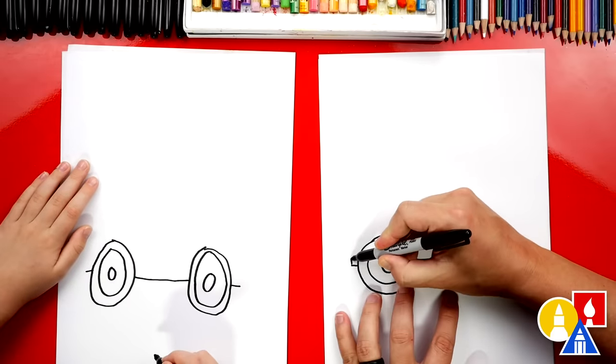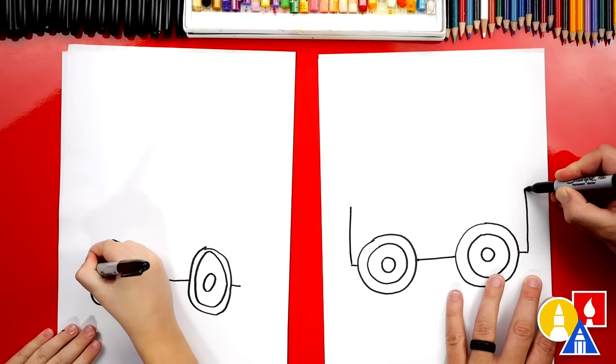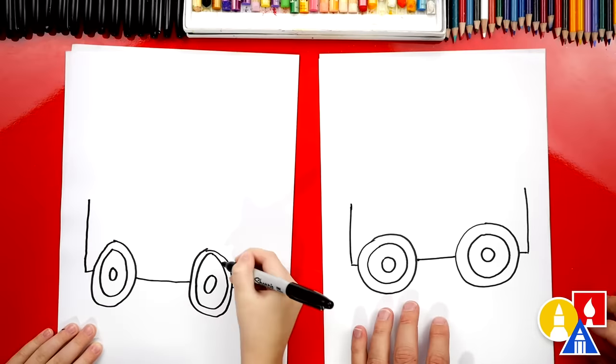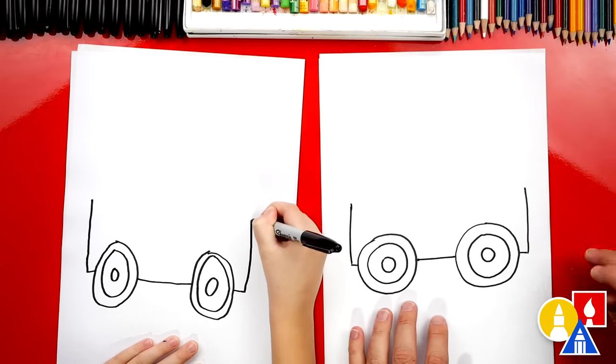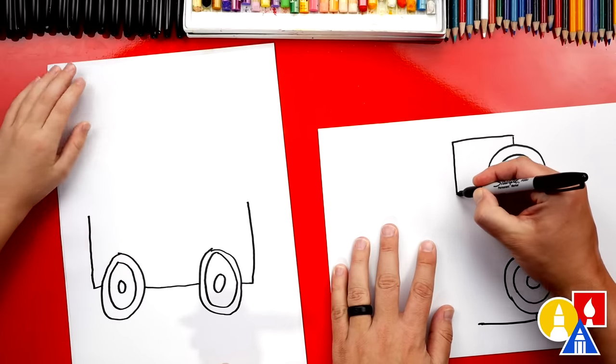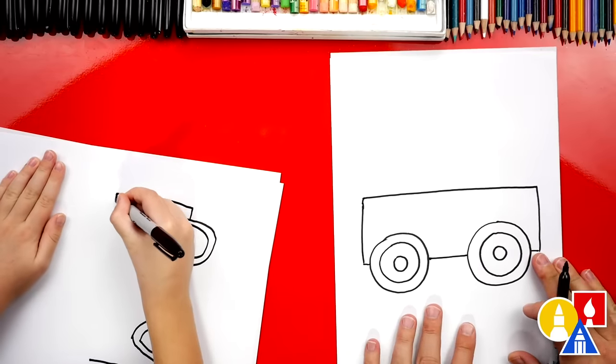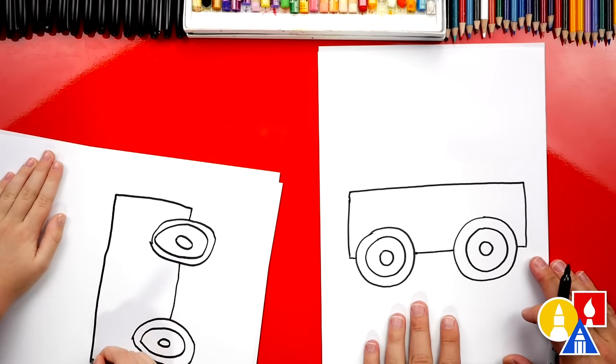You can also use a ruler to line those up, but we just use our eyes to guess. Now we're gonna draw the side of our wagon coming up on each side, and we want these to be the same height. Now I'm gonna turn my paper sideways and we're gonna draw another line that comes all the way across and connects to the other side.